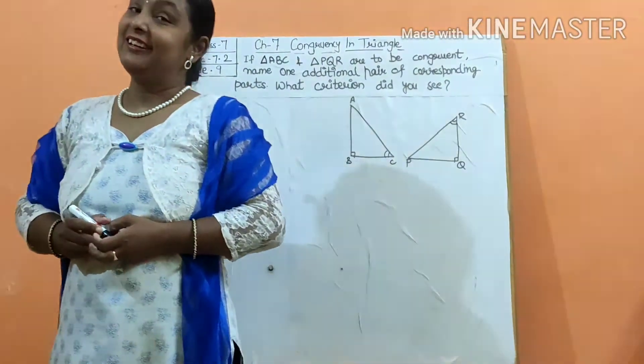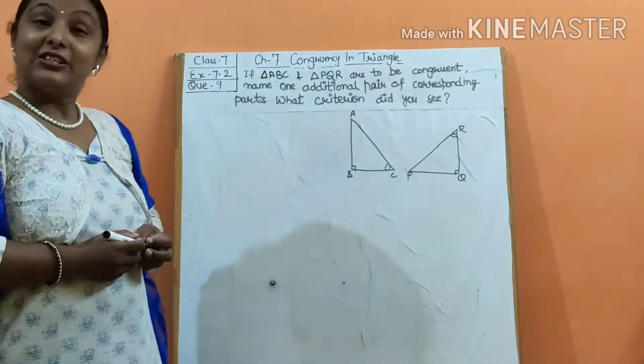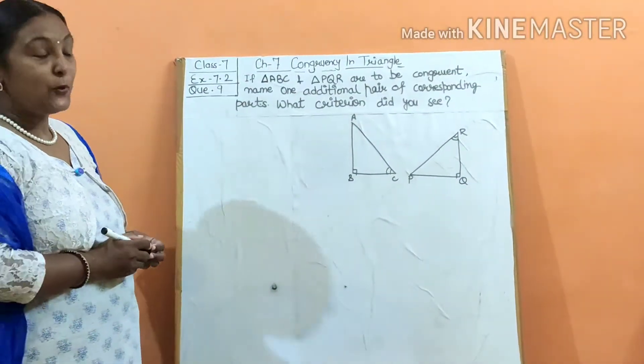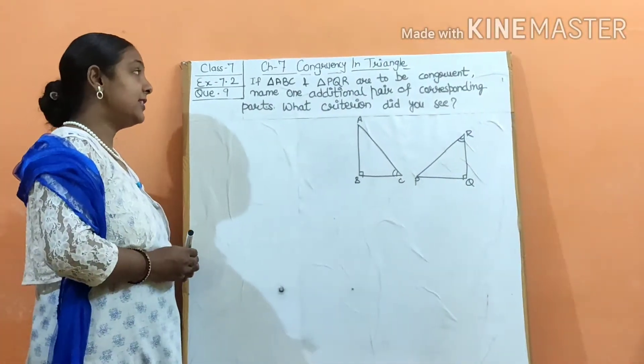Hello everyone, you are on Maths Cookies with me Sarika. So, let's start exercise 7.2 question number 9 of class 7. Question says, if triangle ABC and PQR are to be congruent, name one additional corresponding part that proves your congruency. And what criterion did you see?